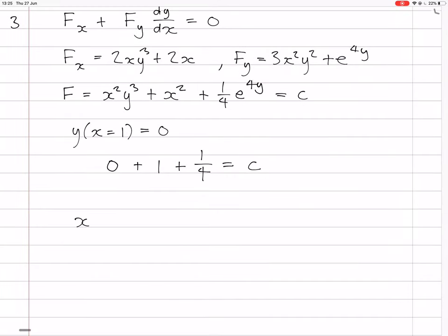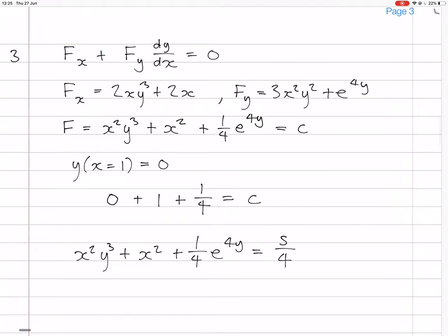So the final solution is x²y³ + x² + (1/4)e^(4y) = 5/4. And that's it.